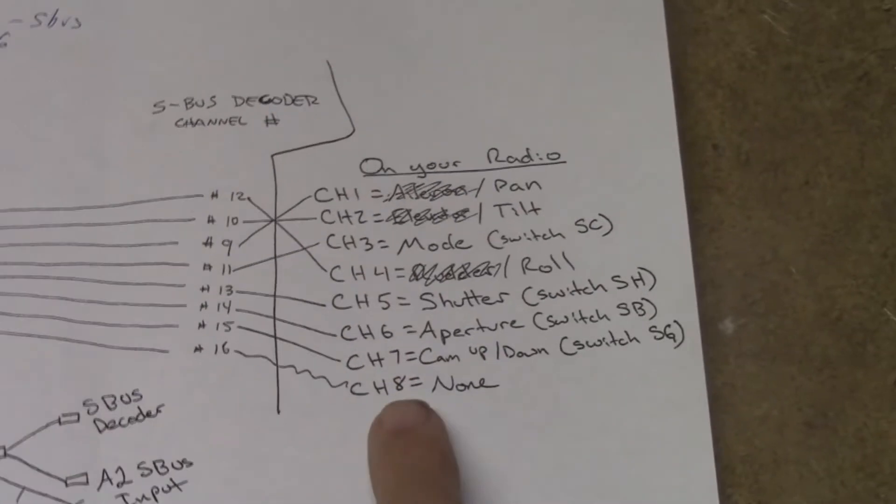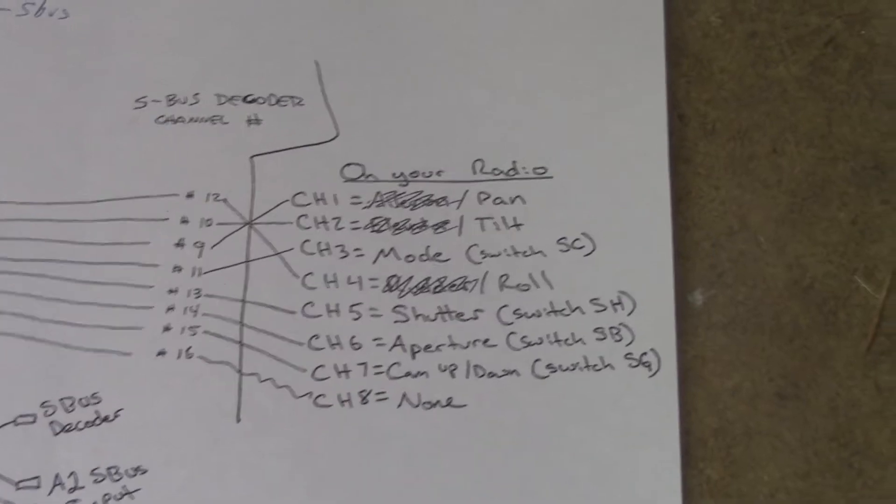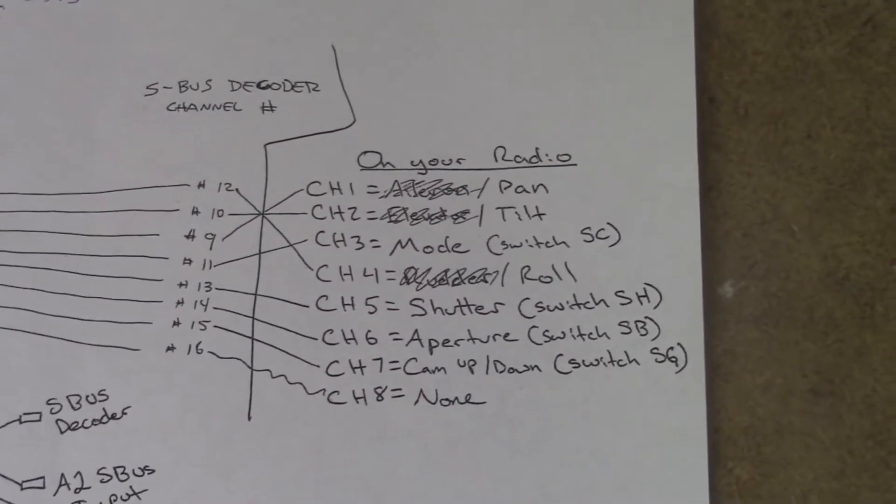I'll just let you take a look at that and see how I have it mapped. And then on the right hand side, my radio. These are the channels that I've mapped it out to in my second radio.